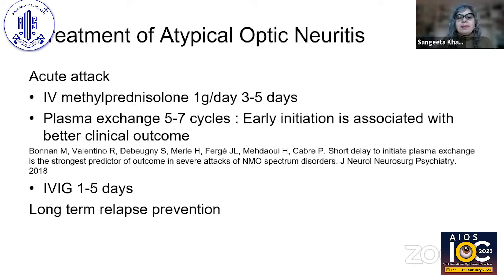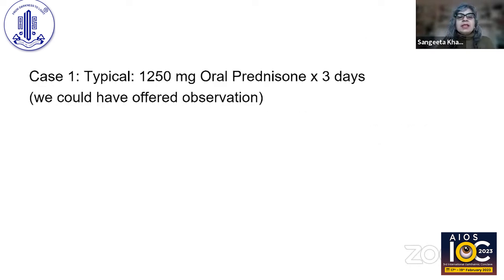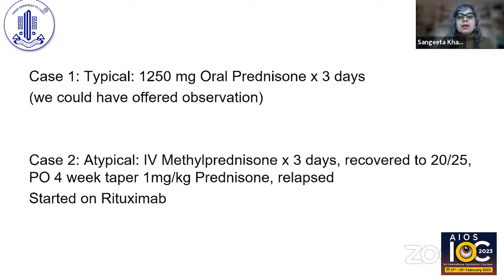We need long-term relapse prevention in patients with aquaporin-4 disease and in some patients with MOG-positive disease. In case one — typical optic neuritis — she chose oral prednisone; we gave her an equivalent oral dose of 1,250 mg. We did not give 70 mg, which is contraindicated. We could have offered observation and that would be fine. Case two — atypical — got IV methylprednisolone for three days, recovered well with a slower oral taper, then relapsed and was started on rituximab.